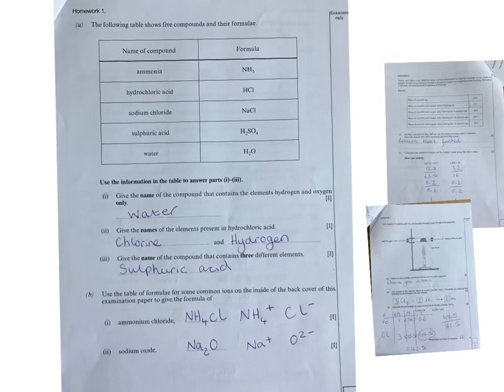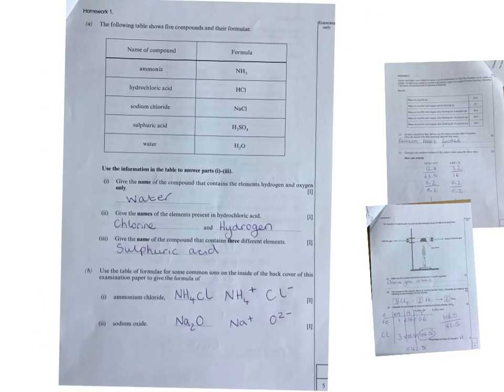Okay, these are just the answers to a couple of homework questions that have been put up to help you. Give the name of the compound that contains elements hydrogen and oxygen. If you look by here, you can see hydrogen and oxygen, so it's water.